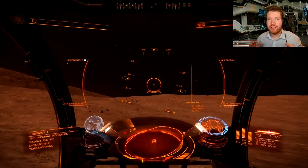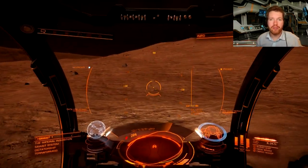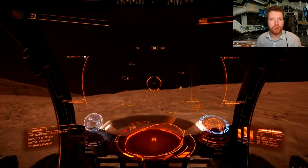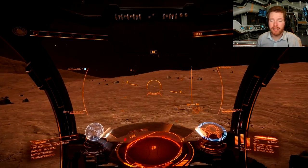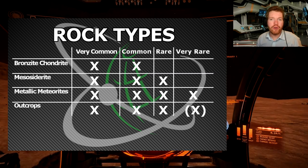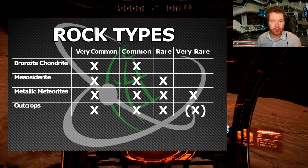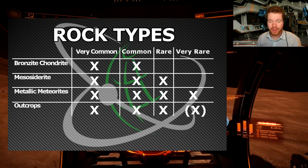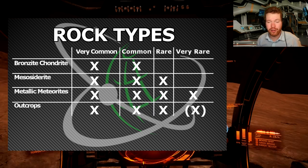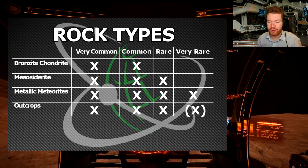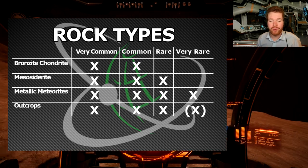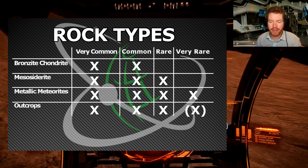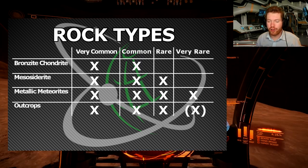When you go out planetary prospecting there is a variety of different rocks you can find on the planet's surface. We're going to go over how you find a good planet later on, but for now I just want to talk about the different types of rocks because that's important when we select the planet. As you can see here there are four different types of rocks: the bronzite chondrite, the mesosiderite, the metallic meteorite, and the outcrop. I have listed what type of materials you find in them. In the bronzite you will find very common and common materials — these are the lowest quality. You may sometimes get some rares but most of the time you'll just get very common and common materials.